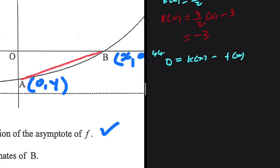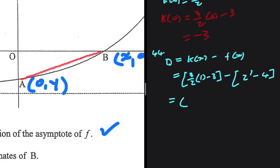We compute k of 1 minus f of 1. For k of 1: three-halves multiplied by 1 minus 3 equals 1.5 minus 3, which is minus 1.5. For f of 1: 2 to the power of 1 minus 4 equals 2 minus 4, which is minus 2. So the distance is minus 1.5 minus minus 2, which equals minus 1.5 plus 2, giving positive 0.5 units.